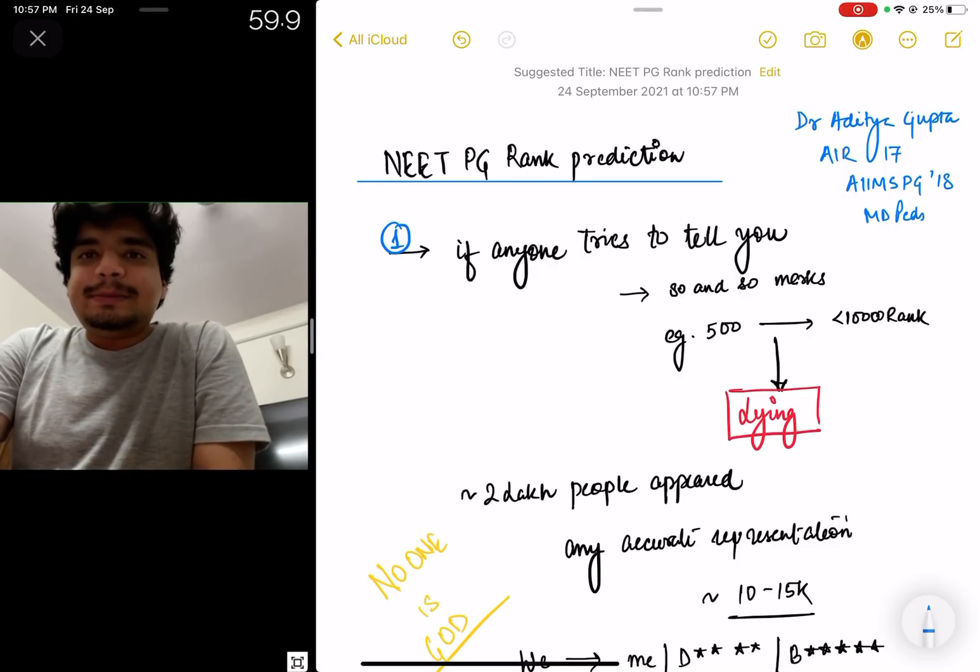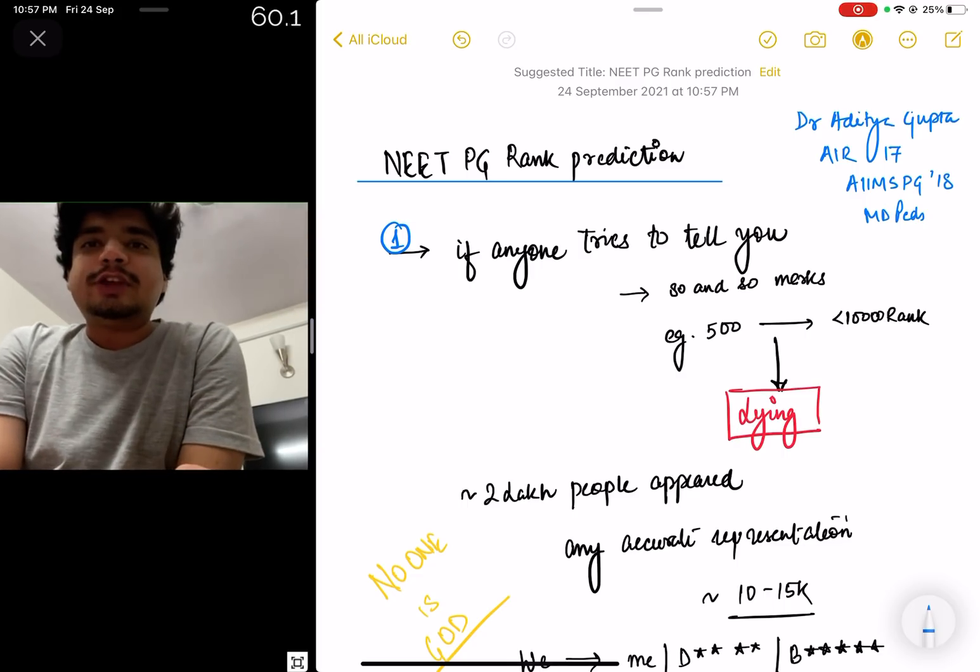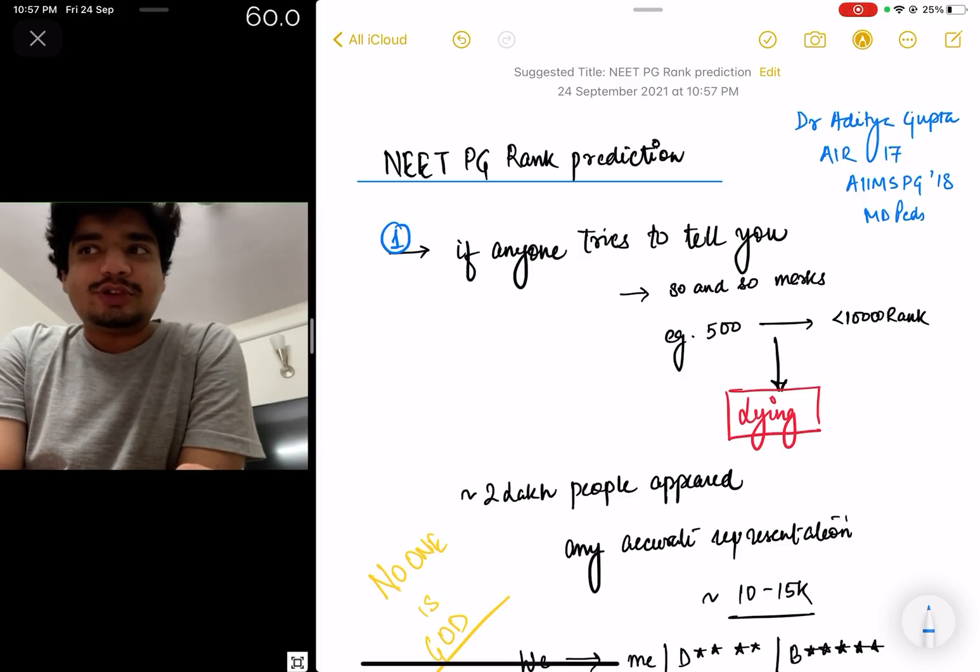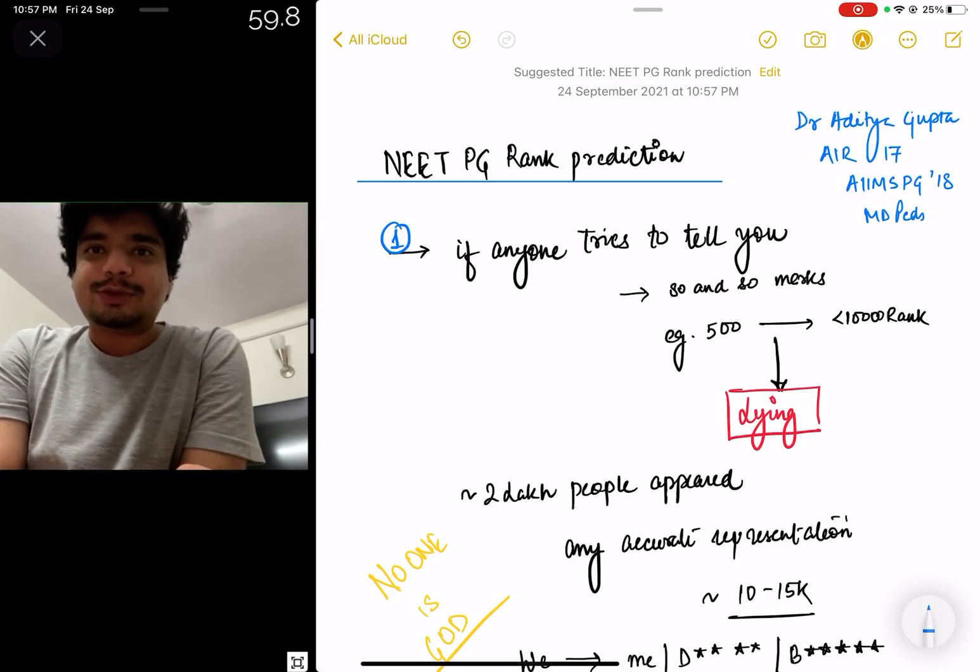Hello everyone, my name is Dr. Aditya Gupta. I secured All India Rank 17 in AIIMS PG 2018. I did my MD in Pediatrics from AIIMS New Delhi and I'm currently pursuing my DM in Pediatric Oncology from AIIMS New Delhi.